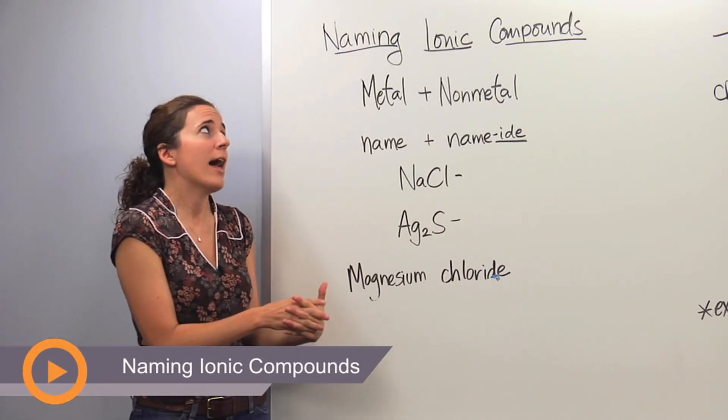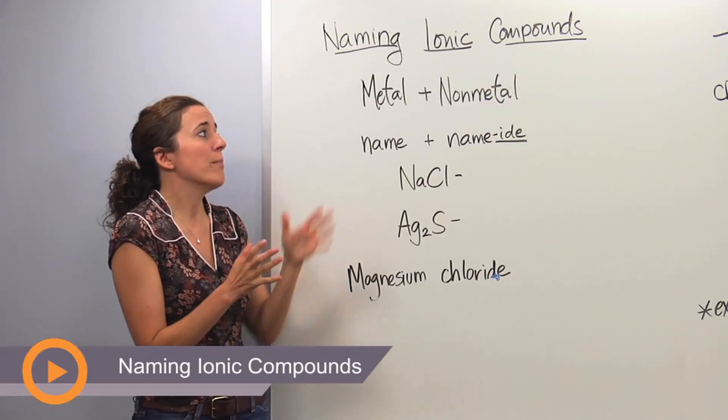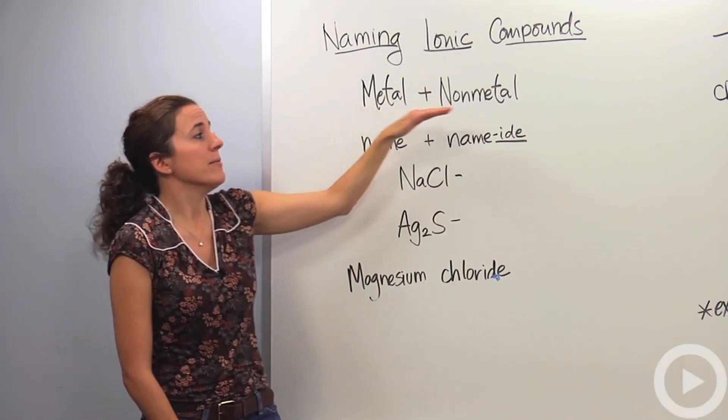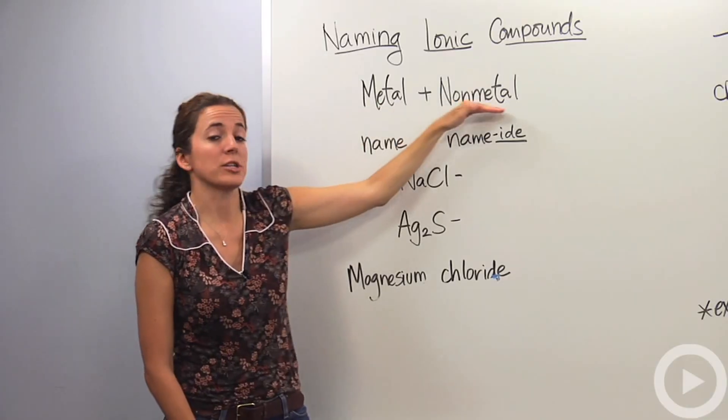We're going to talk about how to name ionic compounds. Ionic compounds are when a metal and a non-metal come together to form a neutral compound. Metals being our cations, non-metals being our anions - positively charged, negatively charged particles.